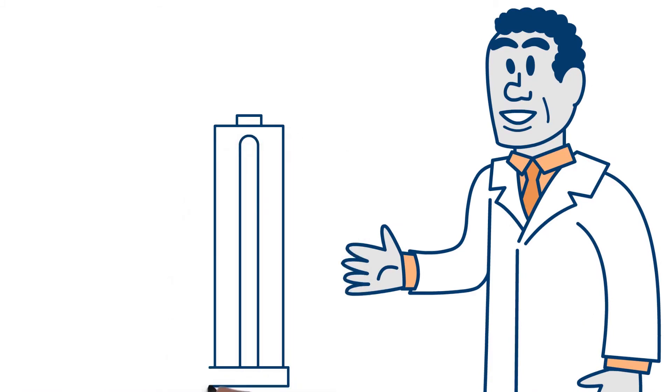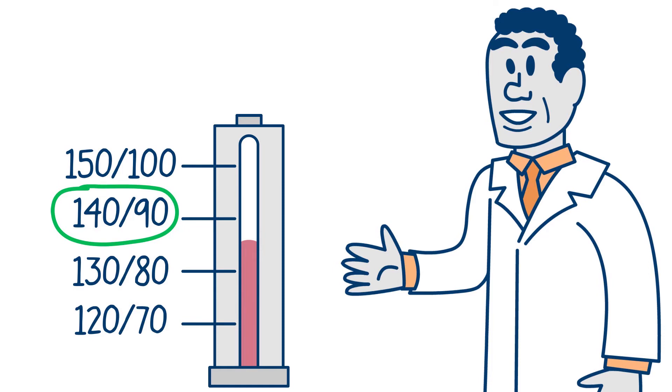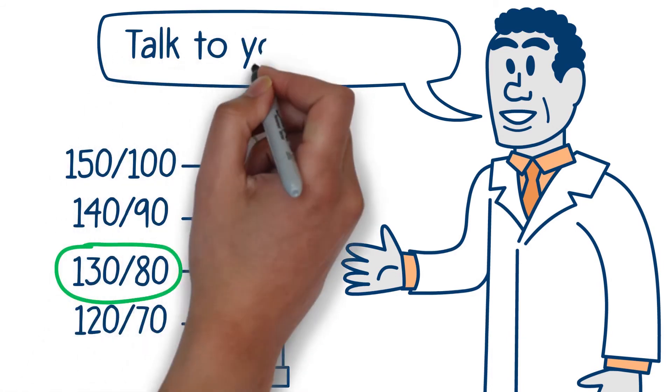How do you know if you're at risk? For many adults, a reading above 140 over 90 is harmful. But for some, above 130 over 80 is unhealthy. Your healthcare providers can help you determine what your target blood pressure should be.